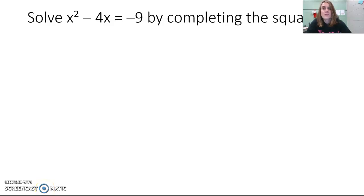Solve x squared minus 4x equals negative 9 by completing the square. So again, we need to make sure that we have our variable terms on one side and our constant on the other side.